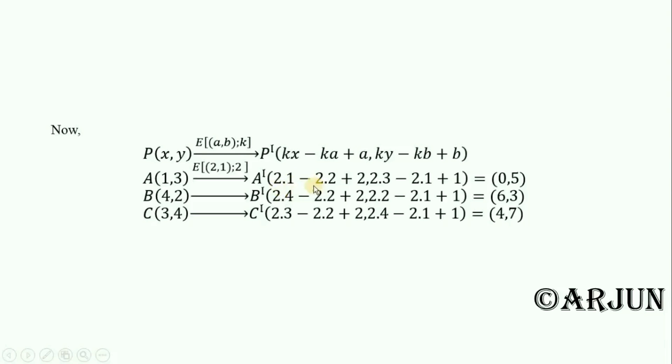2 minus 2, minus 2 plus 2 will be 0. 3 times 2 is 6 minus 2, 6 minus 2 is 4 plus 1 is 5. Similarly B(4,2) is equals to (6,3) that's B prime, and C(3,4) is equals to (4,7). This is our C prime.